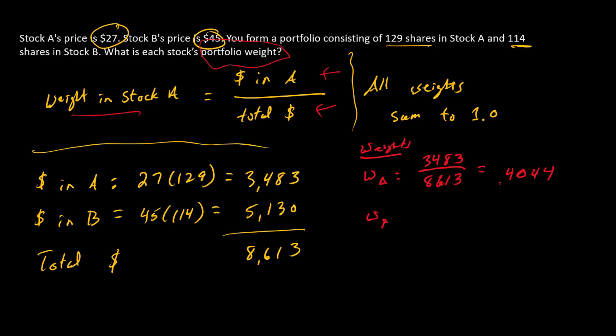Weight for B is dollars in B divided by total dollars, which is 0.5956. So here's our answers.